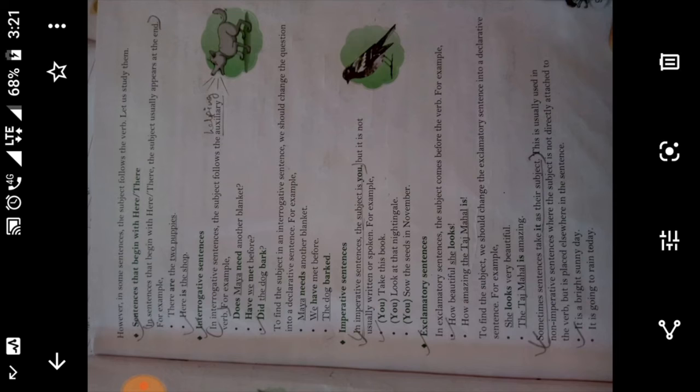Like, examples as you can see. She looks very beautiful. Here, she is the subject. Looks is our verb. The Taj Mahal is amazing. The Taj Mahal is our subject. Is is the verb. So you saw that we changed both sentences into declarative form. And we are putting a full stop at the end of these sentences.